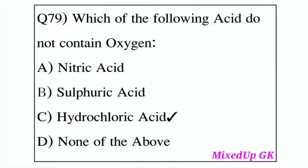Question 79: Which of the following acids does not contain oxygen? Option A: Nitric Acid. Option B: Sulfuric Acid. Option C: Hydrochloric Acid. Option D: None of the above. The answer is Option C, Hydrochloric Acid, which does not contain oxygen.